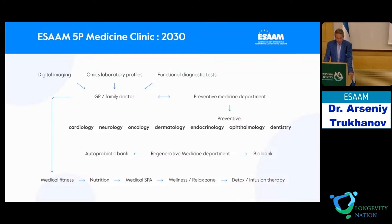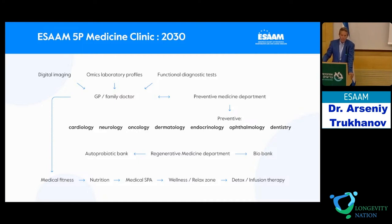How will a 5P medicine clinic look in the future? First, it includes precision medicine: omics laboratory diagnostics, functional diagnostic tests, and digital imaging. All this data is collected by the GP and goes to the preventive medicine department, which should include preventive cardiology, preventive neurology, preventive oncology, dermatology, endocrinology, ophthalmology, and dentistry. Each specialist should complete an anti-aging or longevity course. Additionally, for each patient we need a probiotic bank or microbiota bank and a stem cell bank. The clinic will include medical fitness, medical spa, wellness relax zone, and detox infusion therapy.